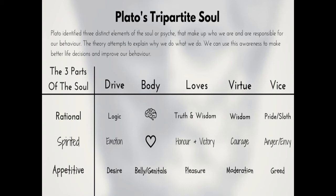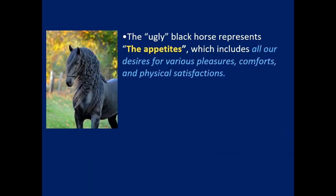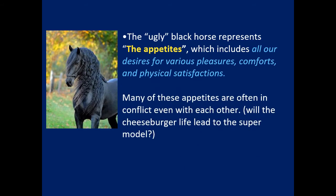In the allegory of the chariot, you have two main characters who are horses. First, the ugly black horse — it represents our appetites, our desires, what we want. A lot of our appetites can come into conflict with each other. The black horse is probably a little bit stronger in today's society, and Plato said the belly and the genitalia represent this black horse.